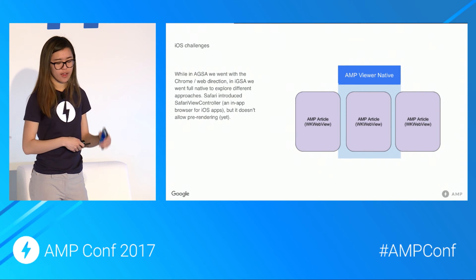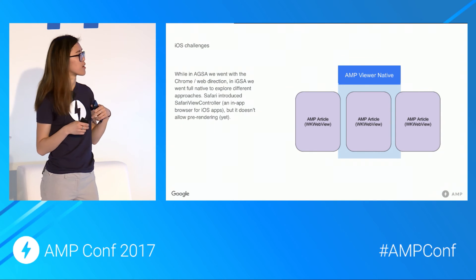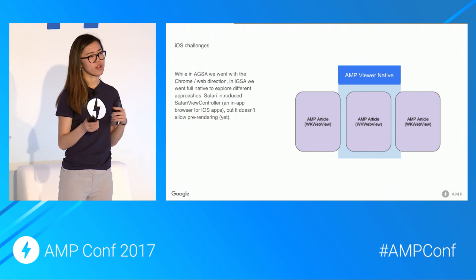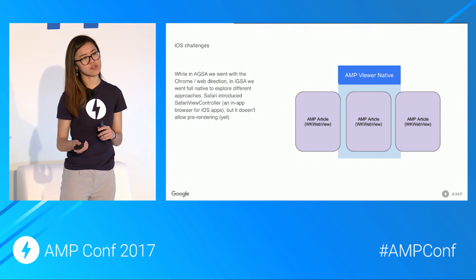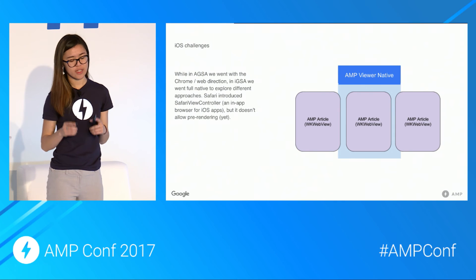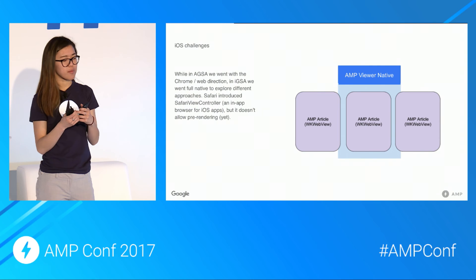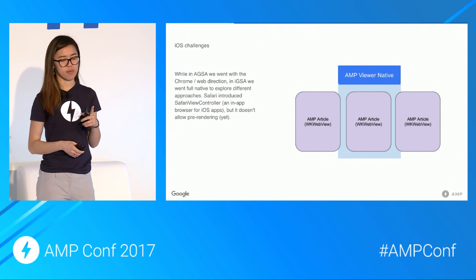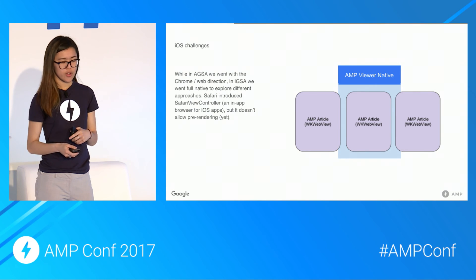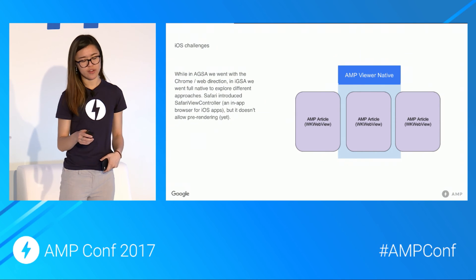On the iOS side, we took the opposite approach and went fully native. Instead of AMP JavaScript managing all the AMP articles, the iOS app itself manages the AMP articles, and each WK WebView renders one and only one AMP document. In terms of UI performance, you get great speed benefits, great animations, and you can use Xcode tooling — so that's what we did on iOS.